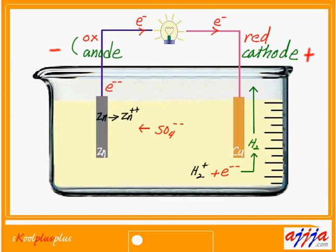Look at this beautiful picture right here. I hope you understand up to this point — electrons moving through the highway which we call a circuit.